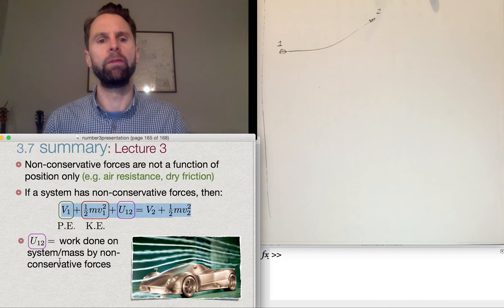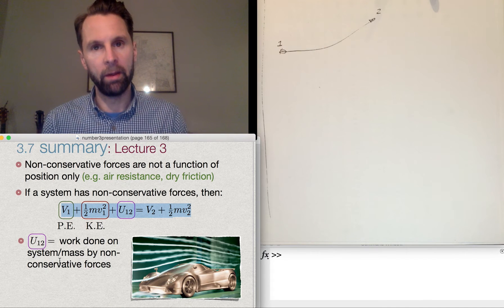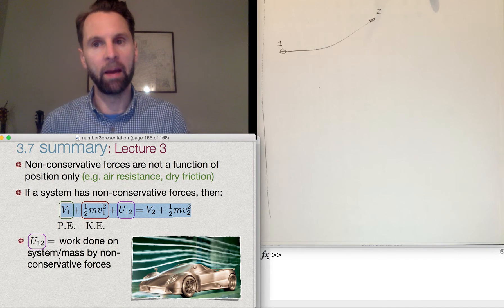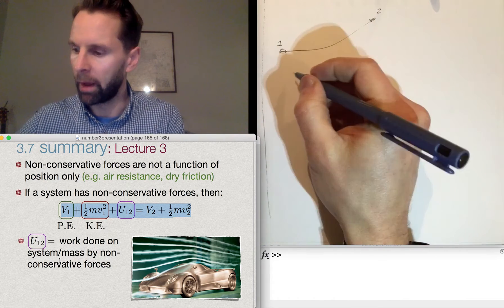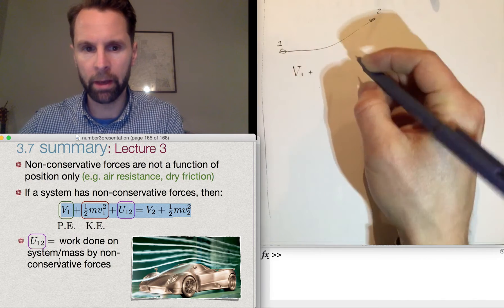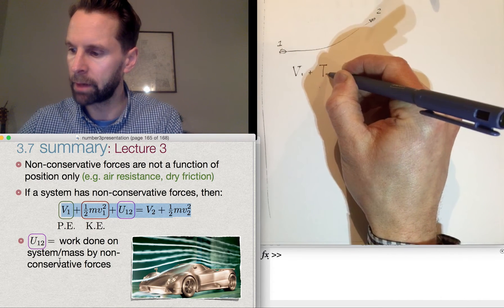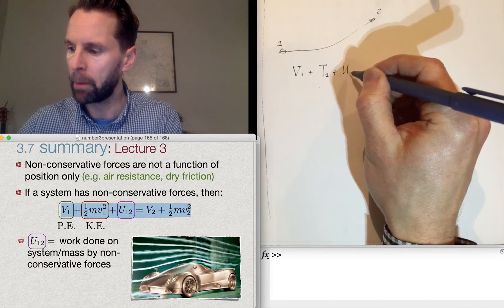That's equal to the potential energy and the kinetic energy at Position 2. So let's just write that out here. So V1 plus—and instead of kinetic energy I'll use T just to make it simpler—plus U12 is equal to V2 plus T2.